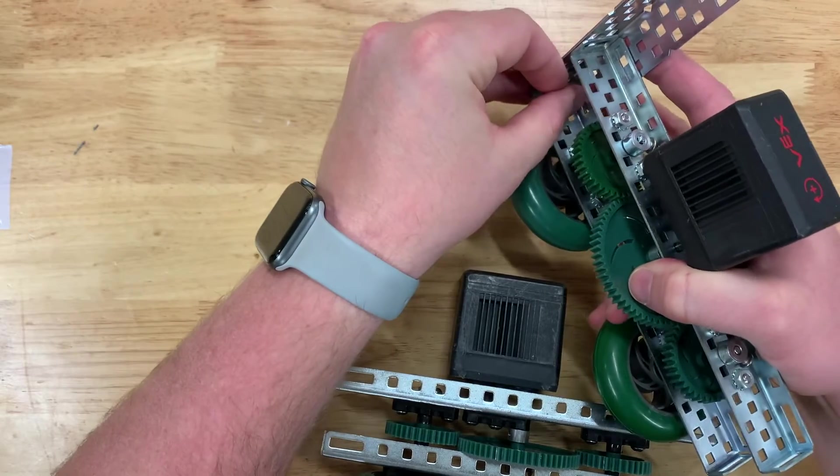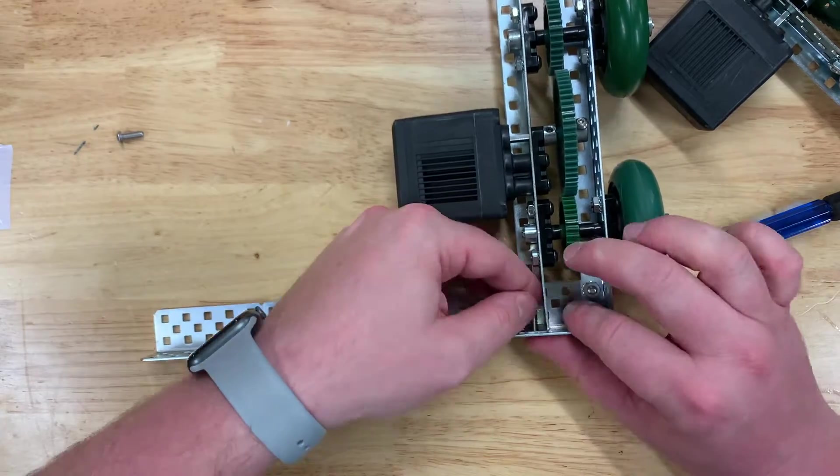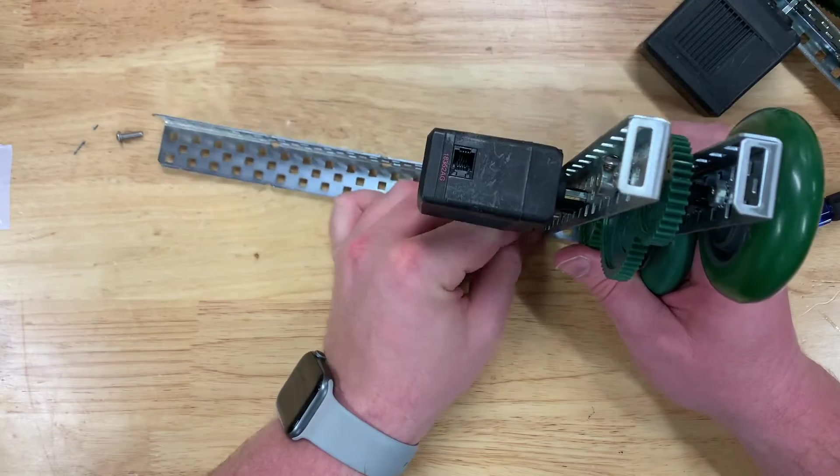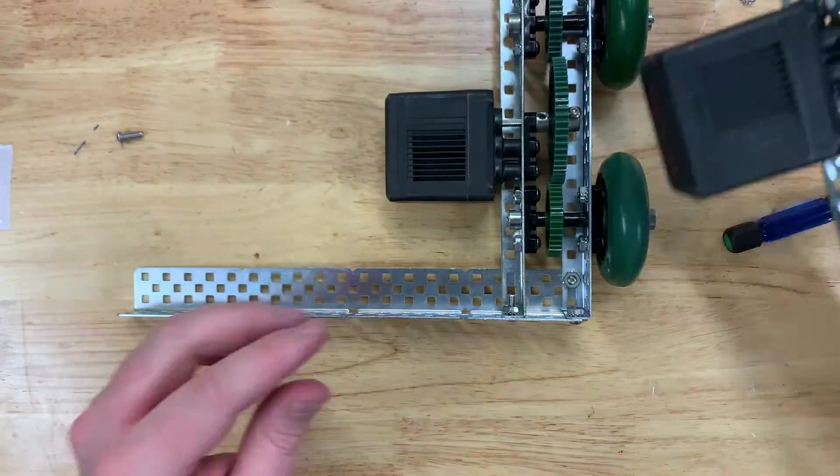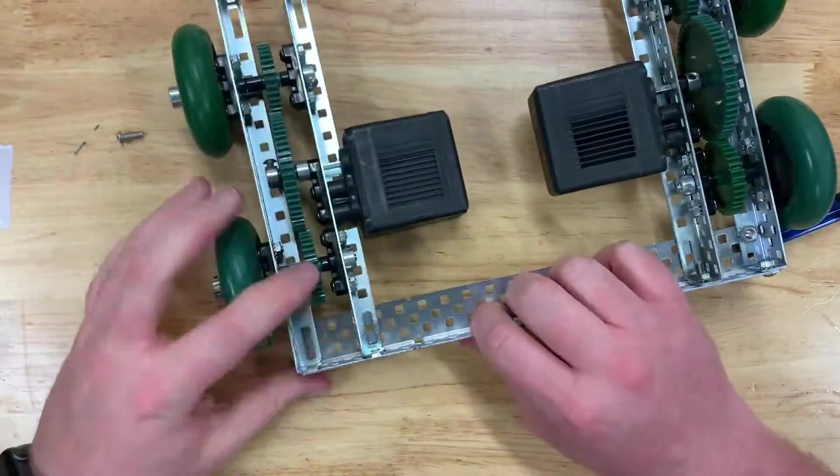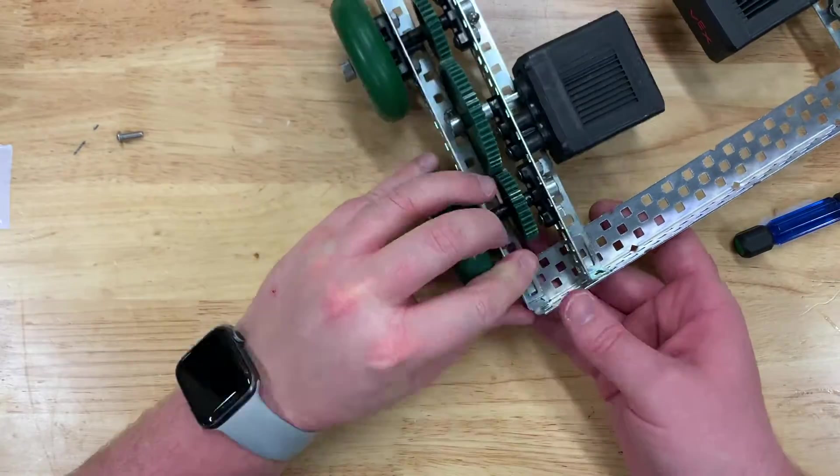So make sure you tighten that. Again, make sure you use your screwdriver to tighten it up as well as a spanner. Make sure you fasten it to both rails, not just the one. Repeat the other side. Obviously make sure that you've got it around the right way and your wheels are facing the right way.